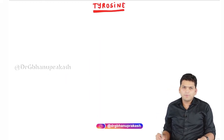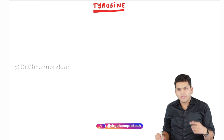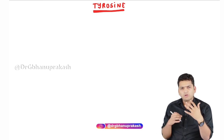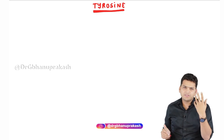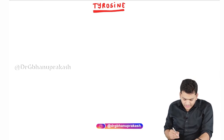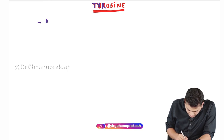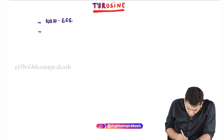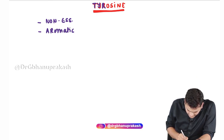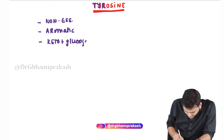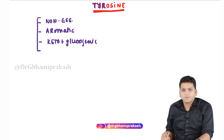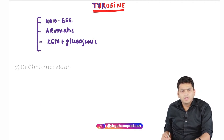Welcome. In this topic we are going to discuss about tyrosine — how it is metabolized and what are the various clinical correlations with tyrosine metabolism. To understand that, let's first note a few properties from the classification part: tyrosine is a non-essential amino acid, it is an aromatic amino acid, and it is a keto plus glucogenic amino acid.